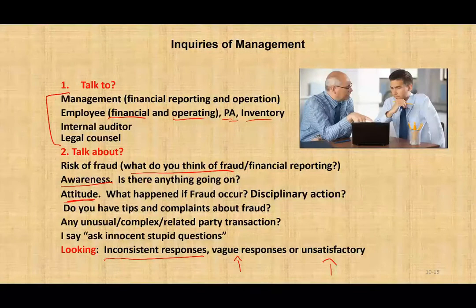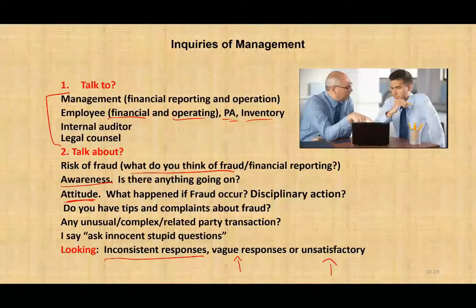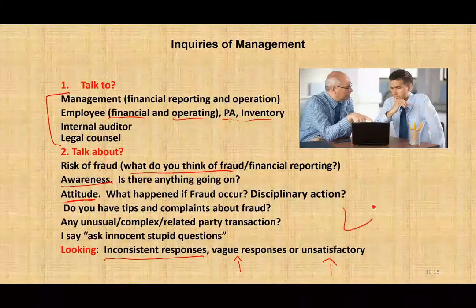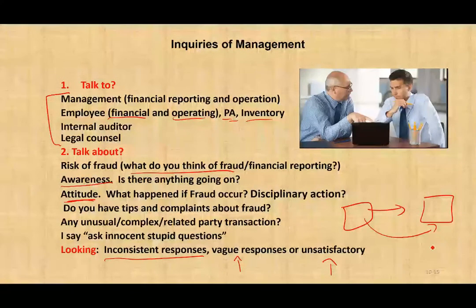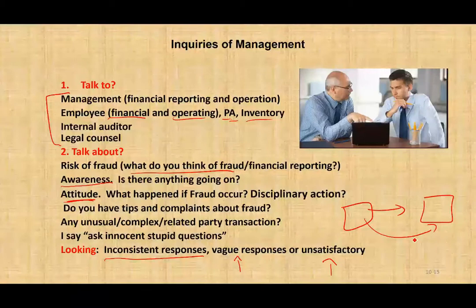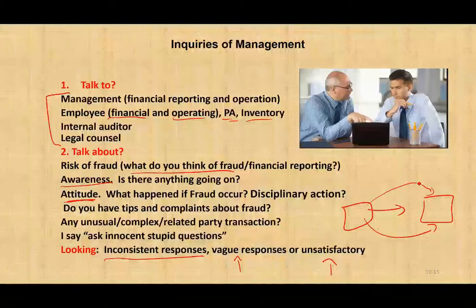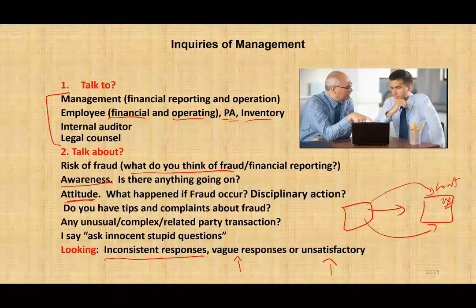One fraud was uncovered when a security guard — the person in charge of the warehouse — asked the auditor, not knowing they were the auditor, if they were the same company that came the night before to bring inventory in. The company was transporting inventory from one warehouse to another. When the auditor asked about this inventory situation, it turned out the company was taking inventory from one warehouse overnight, transporting it to a second warehouse to count the inventory twice. The auditor uncovered this fraud by just talking to the security guard — that's what asking innocent, stupid questions means.